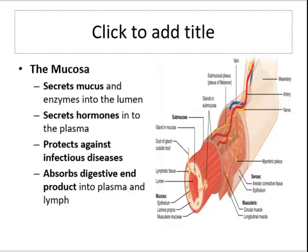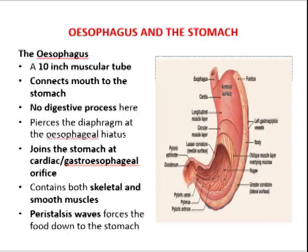The oesophagus has an adventitia rather than a serosa. It is a layer of fibrous connective tissue that firmly holds the organ in place. Intraperitoneal digestive organs have a serosa on the side facing the peritoneal cavity and an adventitia on the dorsal side. We'll go on to look at the oesophagus and the stomach.